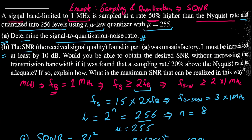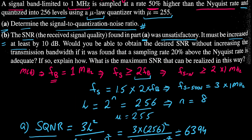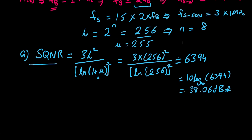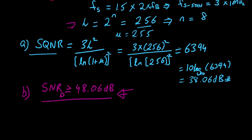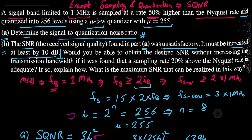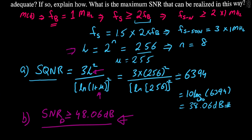In the second part, the SQNR received in part A is unsatisfactory — it must be increased by at least 10 dB. So the desired SQNR should be greater than or equal to 48.06 dB. To achieve this, either we can increase the number of quantization levels or change the parameter μ. Since μ is fixed, we are left with increasing the quantization levels.